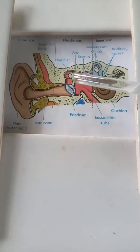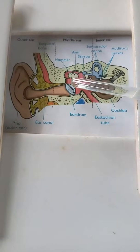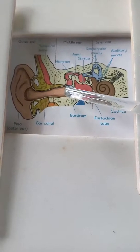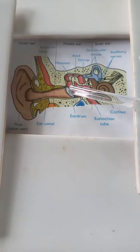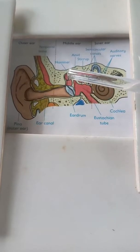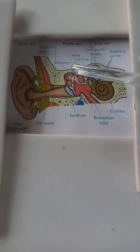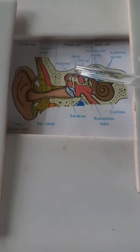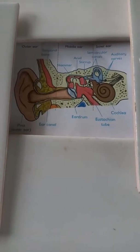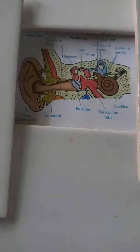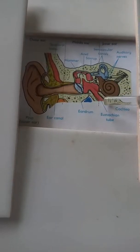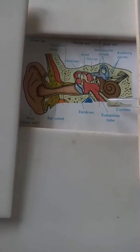The middle ear is an air-filled cavity that consists of an eardrum and three small interconnected bones: the hammer, anvil, and stirrup. The Eustachian tube connects the middle ear and throat, which regulates pressure.